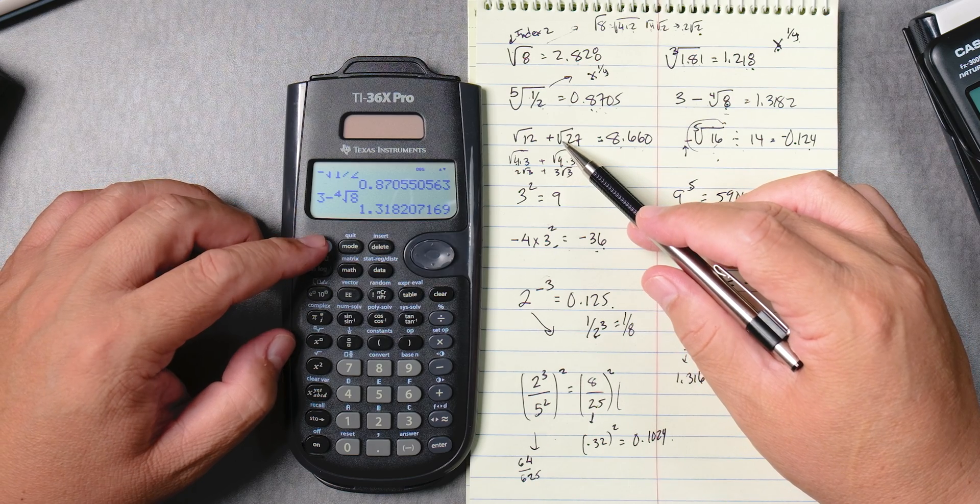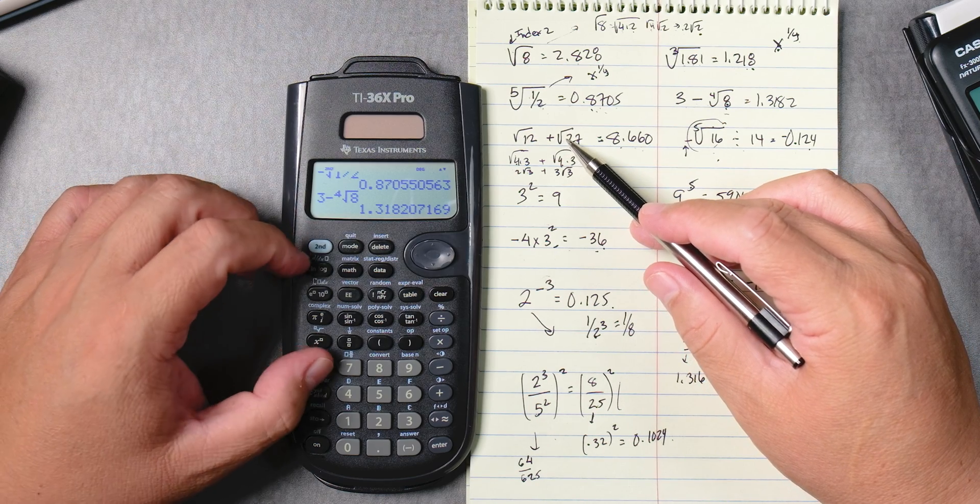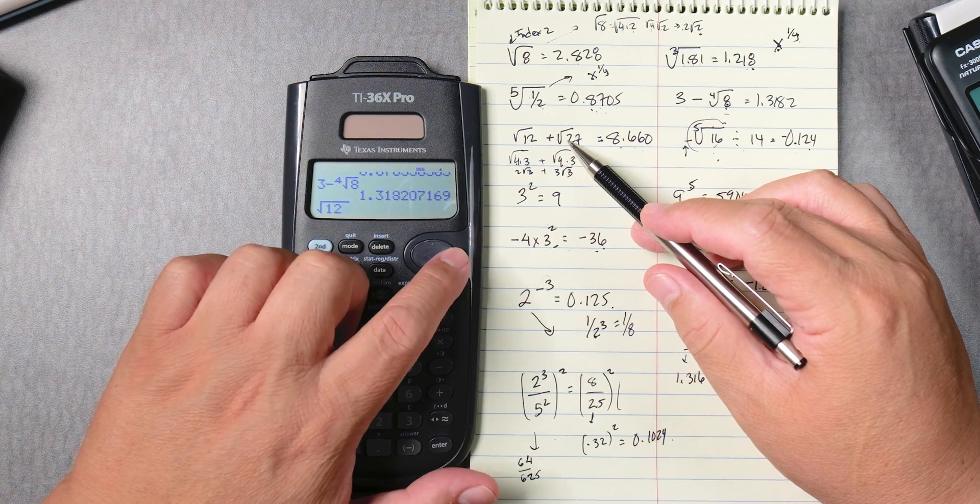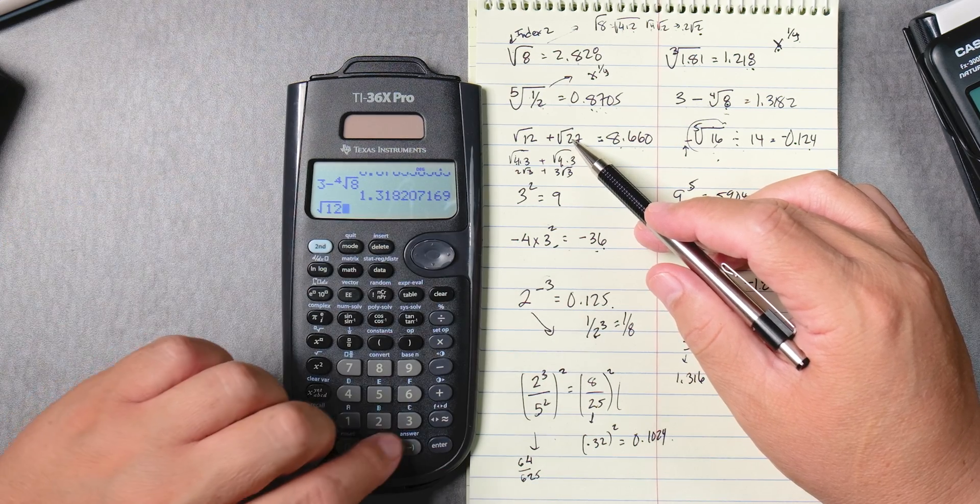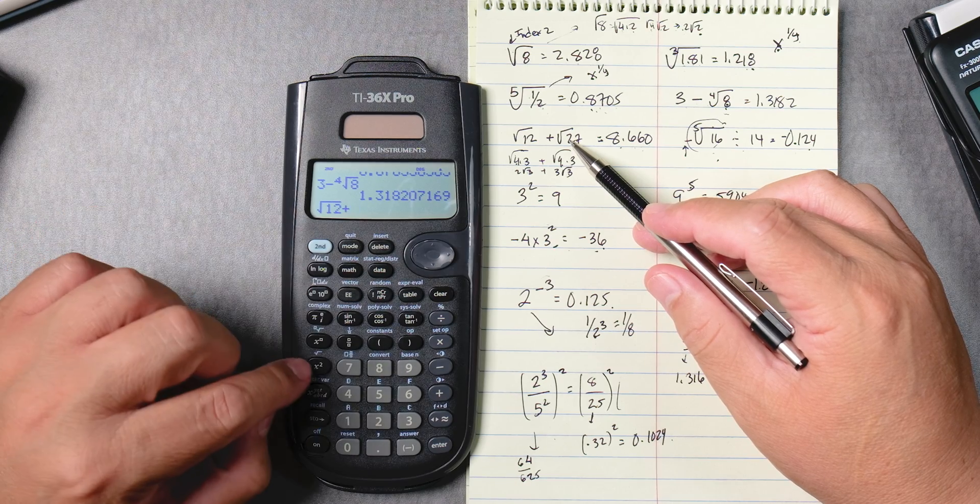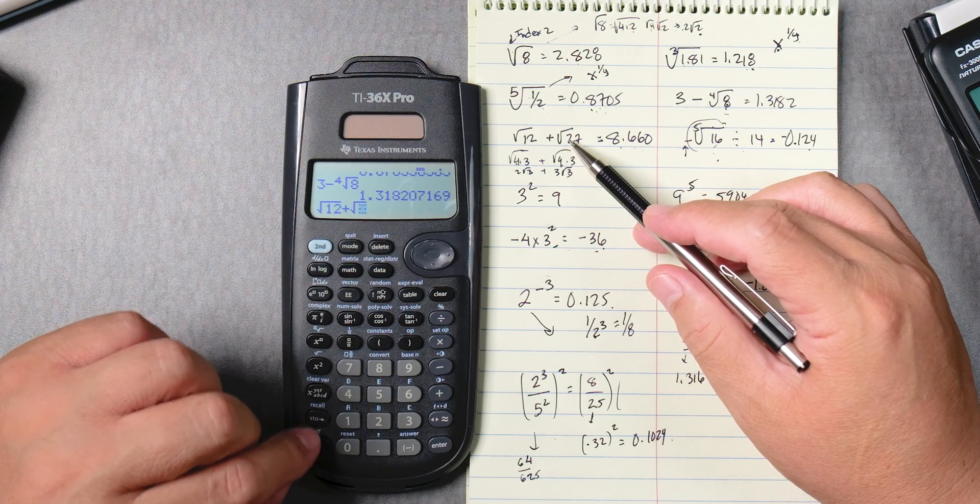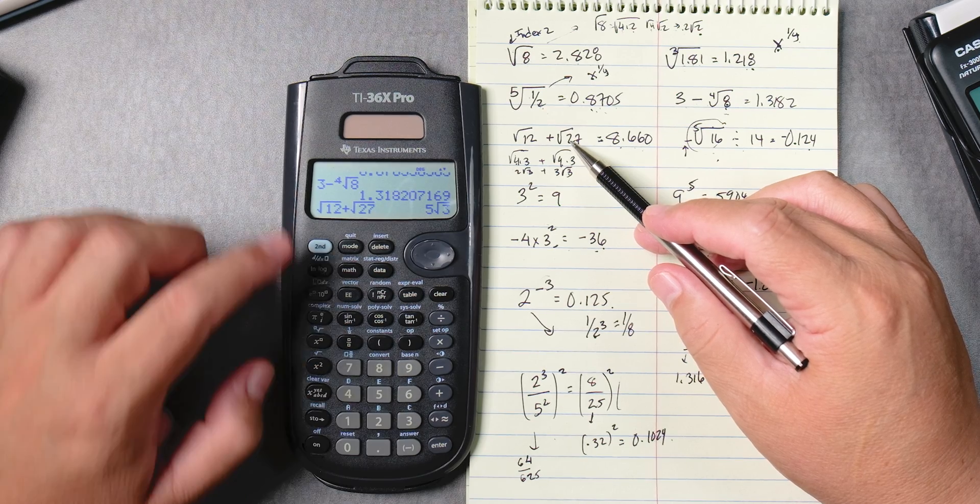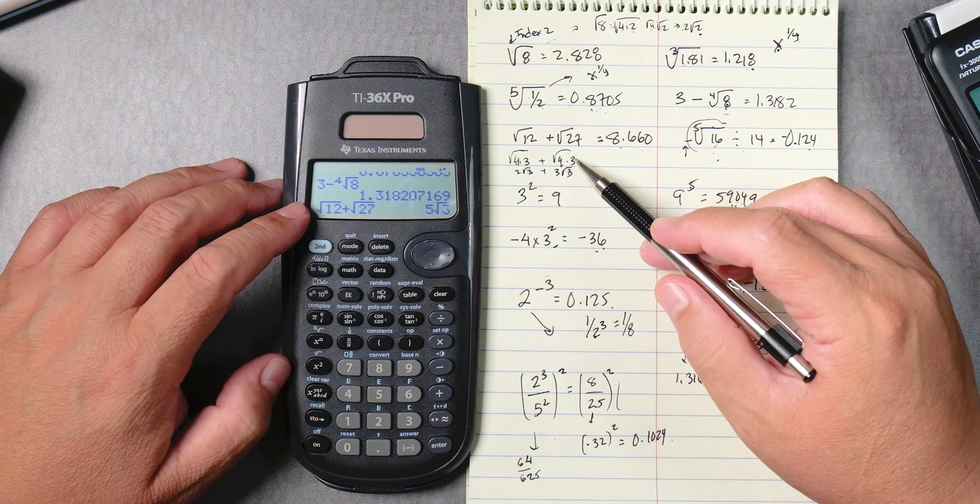Let's do this one. So this is going to be second, x squared, to give you the square root, 12, move the cursor over to the right, plus second, x squared, and then type 27, and then press enter. And this one gives you 5 square root of 3.